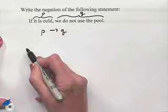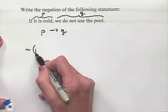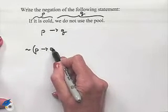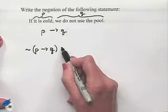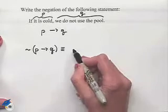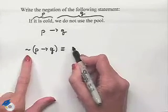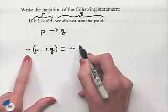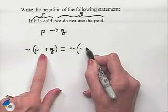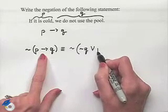Now what we want to do is to negate this conditional. To do so, we're going to first write the conditional in its equivalent format as a disjunction. We're going to have the negation of not Q or P.